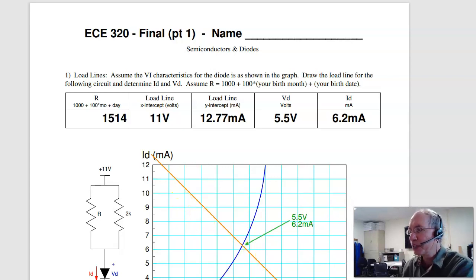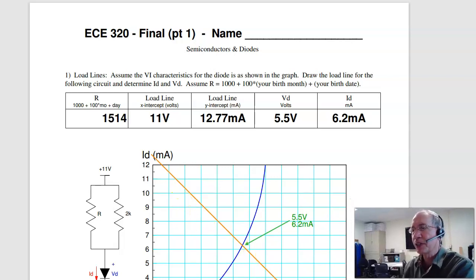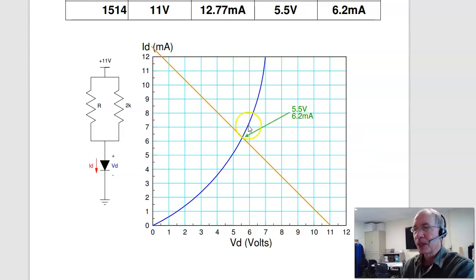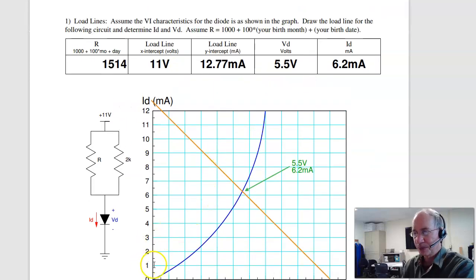Here's the solution to the final exam for ECE 320 Digital Electronics for Fall 2021. The first problem is a load line. Given the loop line and the circuit, draw the load line and find the solution.